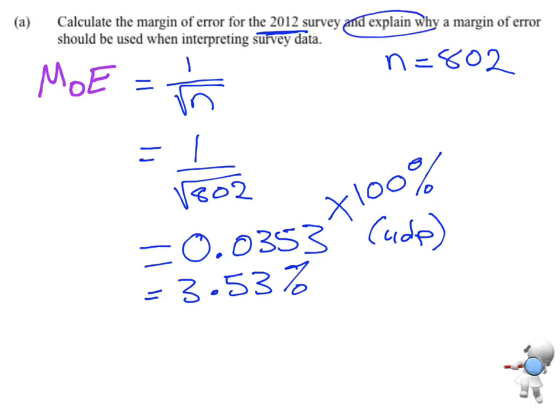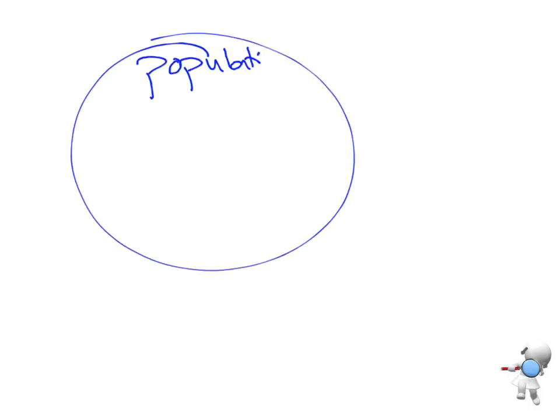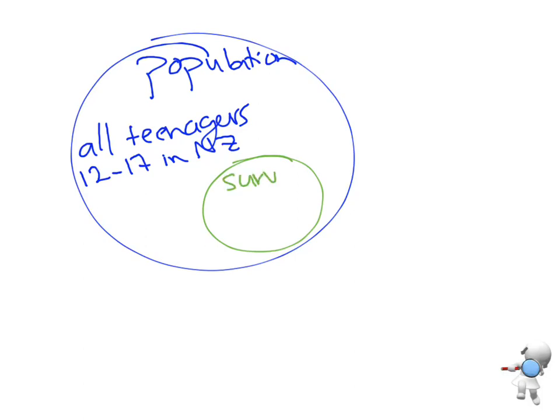Now the second part says explain why we should use a margin of error. This comes back to the big idea about what margins of error are. So we have a population that we're interested in, and in this case the population would be all teenagers from 12 to 17 in New Zealand, that would be our entire population. What they have done is gone and taken a survey and sampled 802 teenagers.